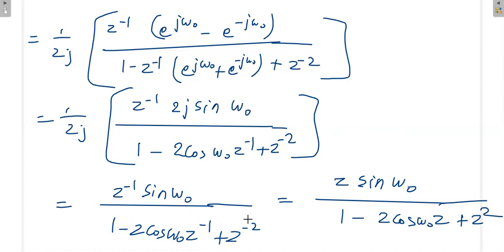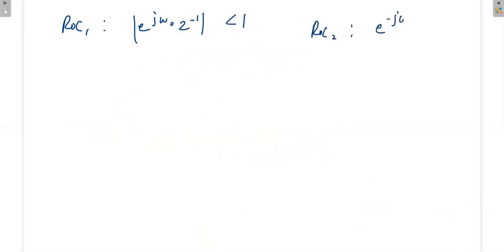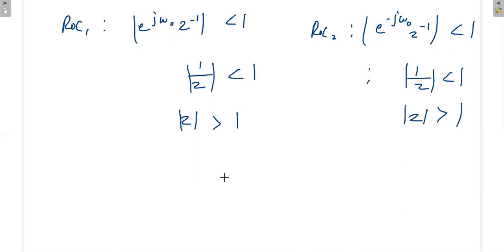Correcting: multiplying numerator and denominator by z² gives X(z) = z·sin(ω₀) / (z² - 2cos(ω₀)z + 1). For the ROC: ROC 1 requires |e^(jω₀)z^(-1)| < 1, giving |z| > 1. ROC 2 requires |e^(-jω₀)z^(-1)| < 1, also giving |z| > 1. The common ROC is |z| > 1.